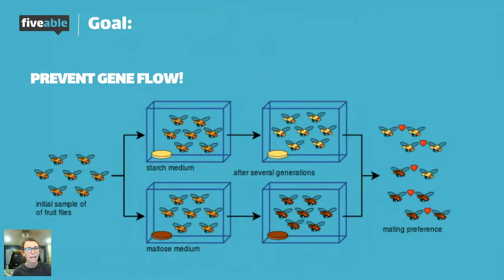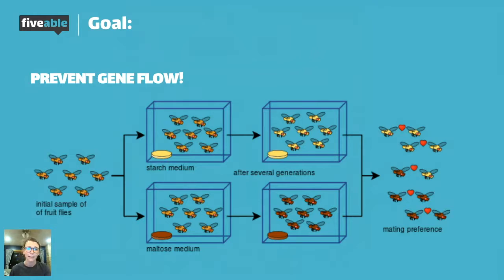The big thing that happened there is that there was some sort of chemical reaction that's keeping the same species together and some separated. But when we talk about allopatric and sympatric speciation, I want you to think about how they're preventing gene flow amongst populations. Because if you look at the left-hand side when we first divided these flies into our starch medium and our maltose medium, they're still the same species there.